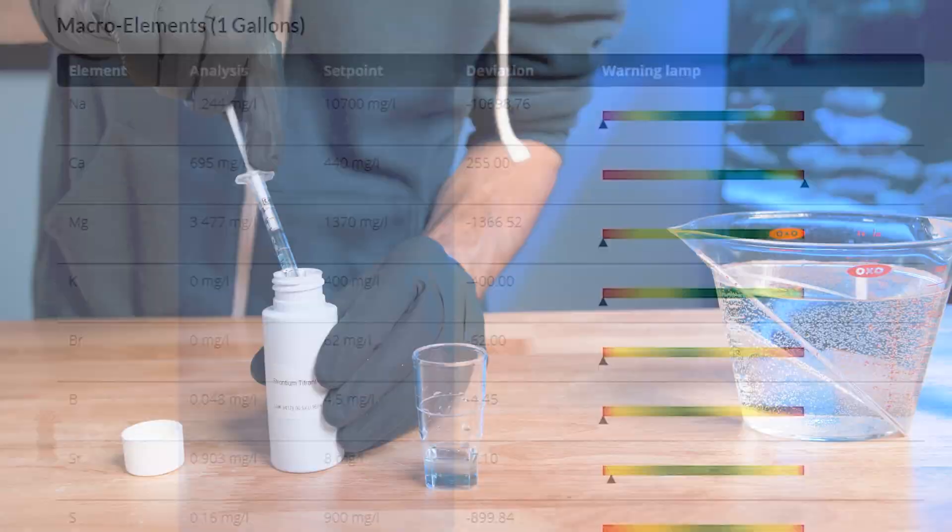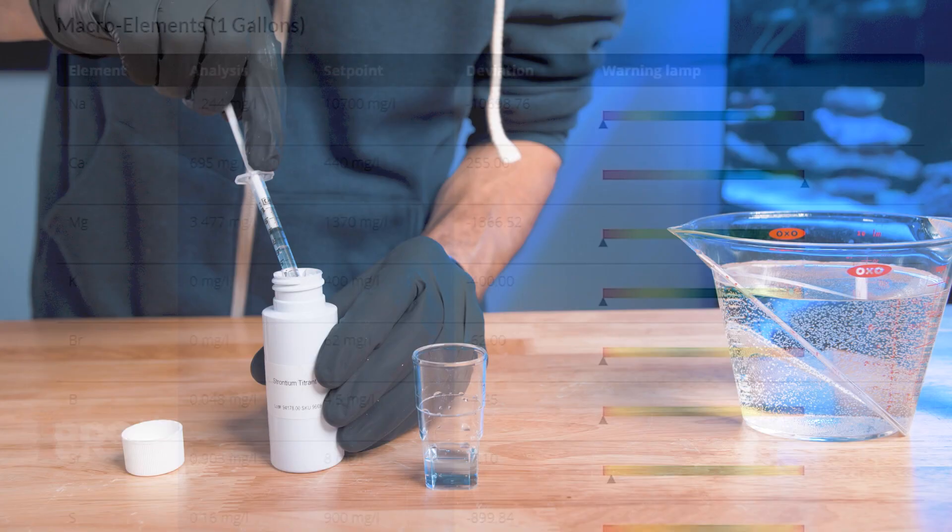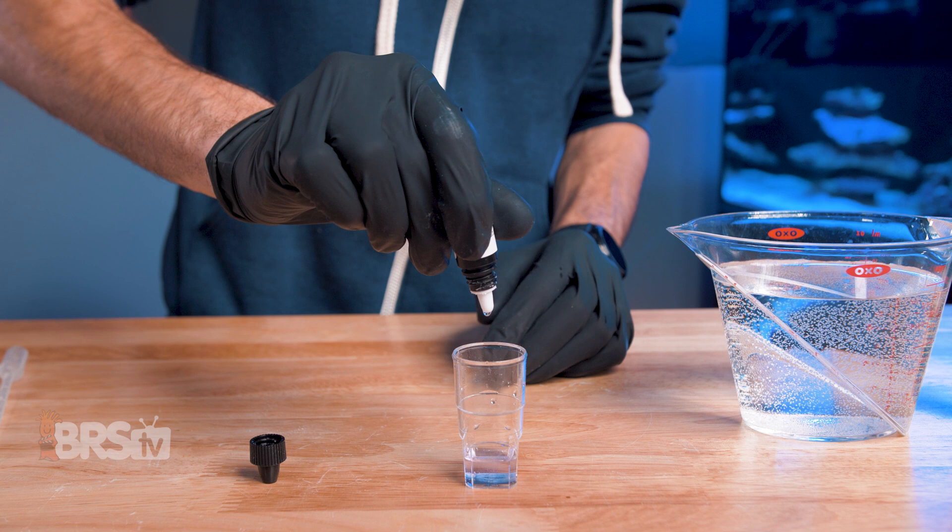Strontium test kits are another option, but many can only read in increments of five parts per million, making it difficult to dose precisely and keep your reef within that natural range of seven to nine.